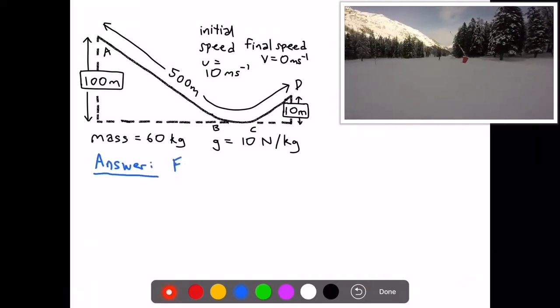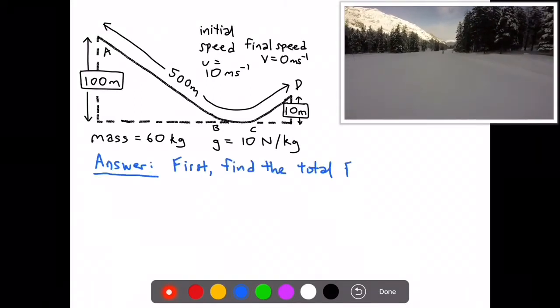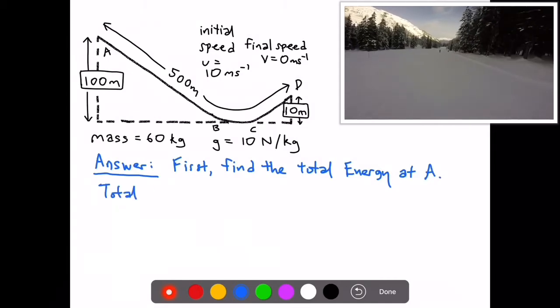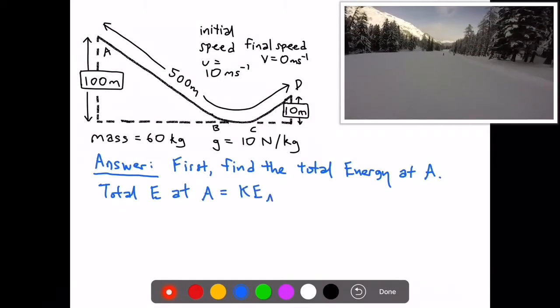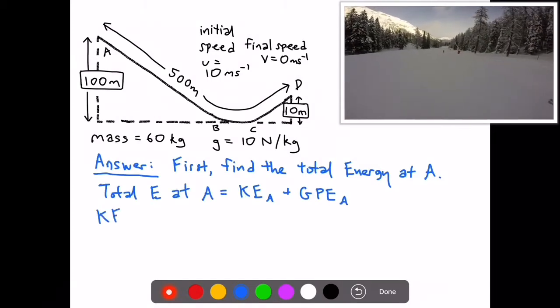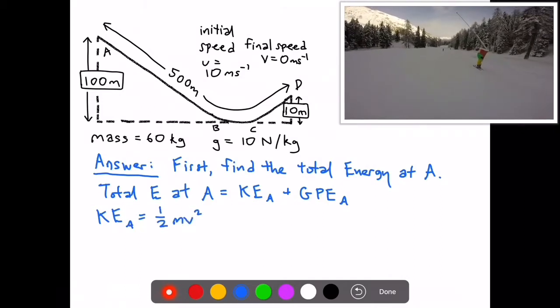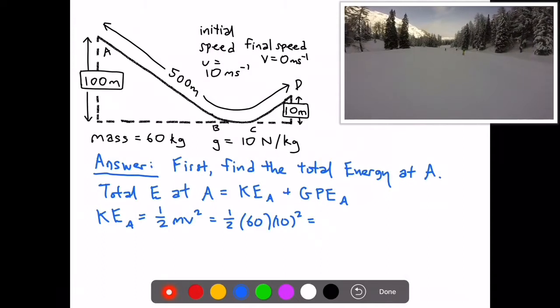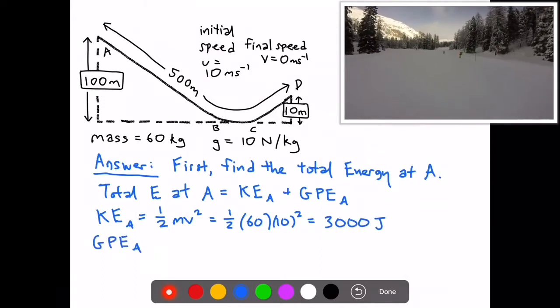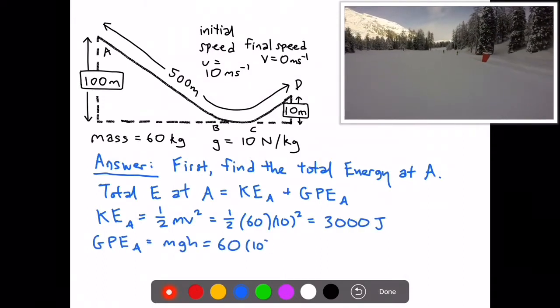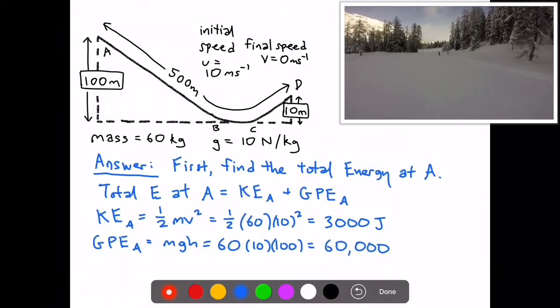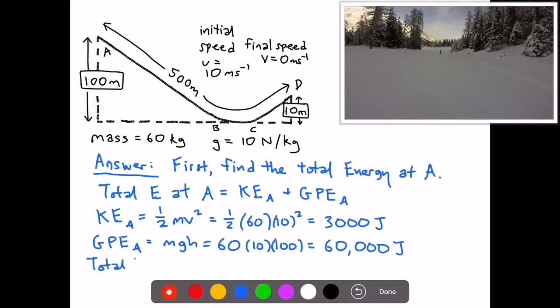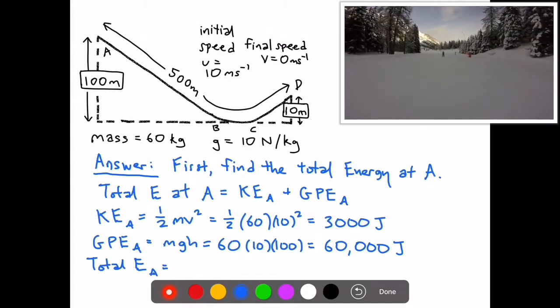So for the answers, firstly we find the total energy at A. The total energy at A is equal to the KE at A plus the GPE at A. The KE at A is equal to half mv squared, which is equal to half times 60 times 10 squared, which is equal to 3,000 Joules. The GPE at A is equal to mgh, which is equal to 60 times 10 times 100, which is equal to 60,000 Joules.